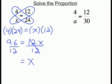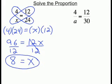On the right side, the 12s cancel each other out and we are left with x. On the left side, 96 divided by 12 equals 8. So x equals 8.